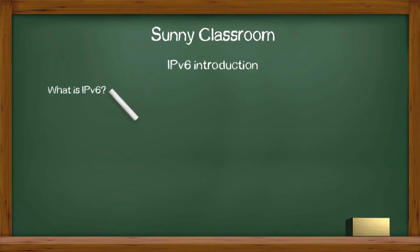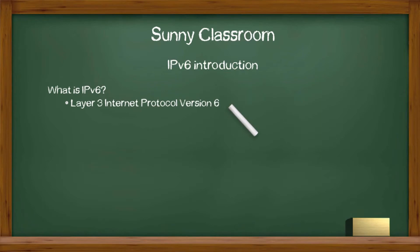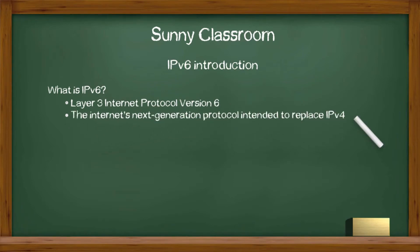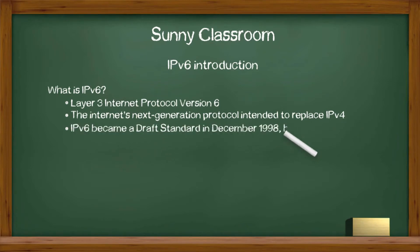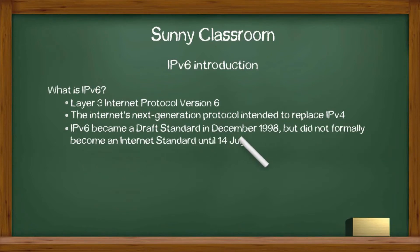IPv6 is the latest version of Internet Protocol. IPv6 is a layer 3 protocol of the OSI model. It is the Internet's next generation protocol intended to replace IPv4. IPv6 became a draft standard in December 1998, but did not formally become the Internet standard until July 14, 2017.